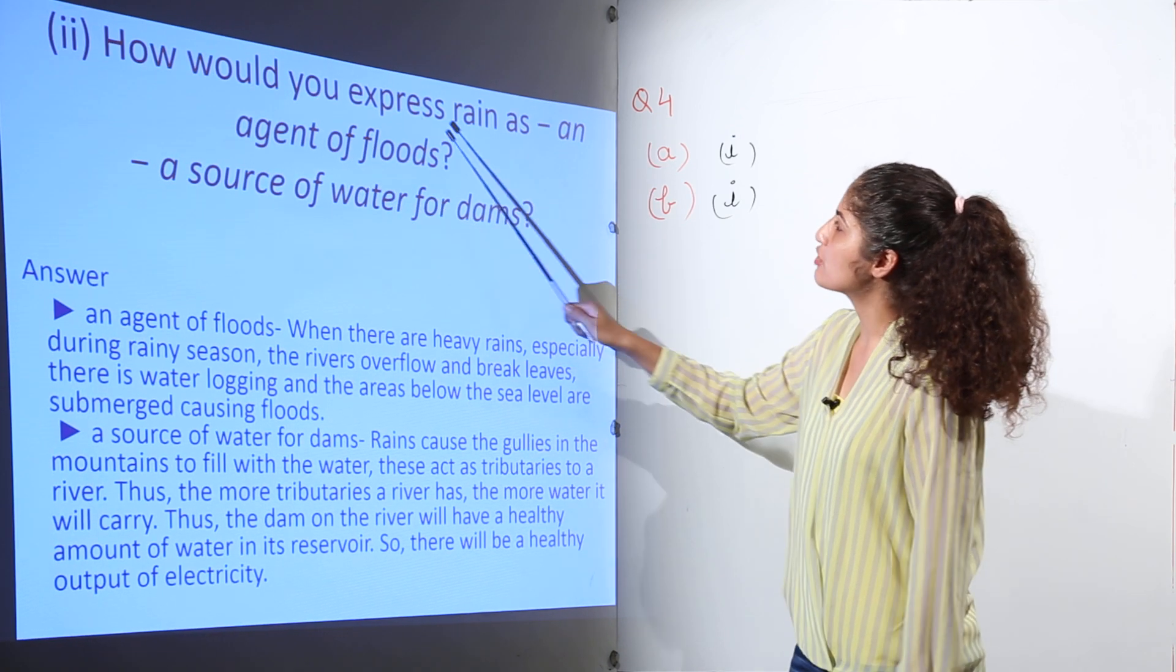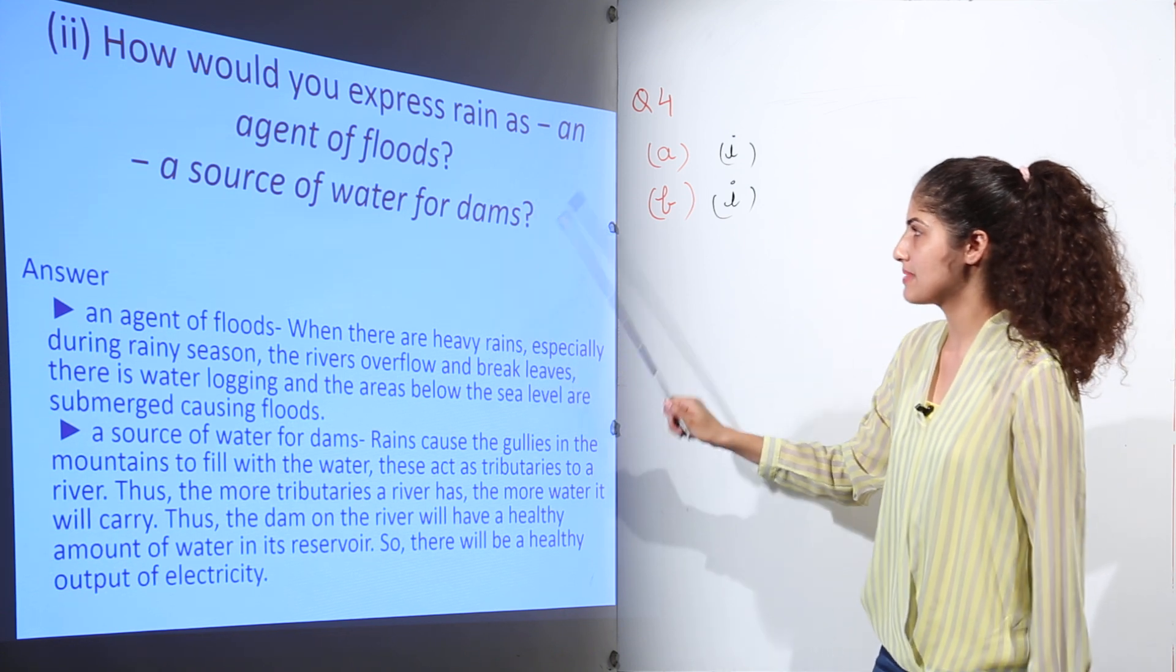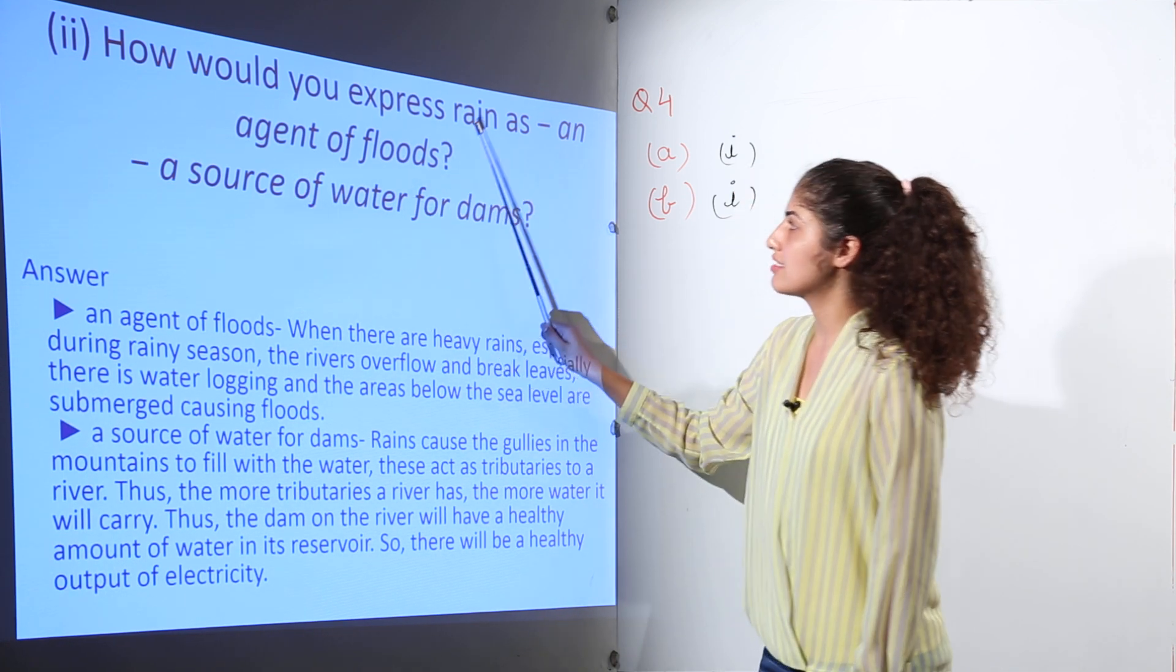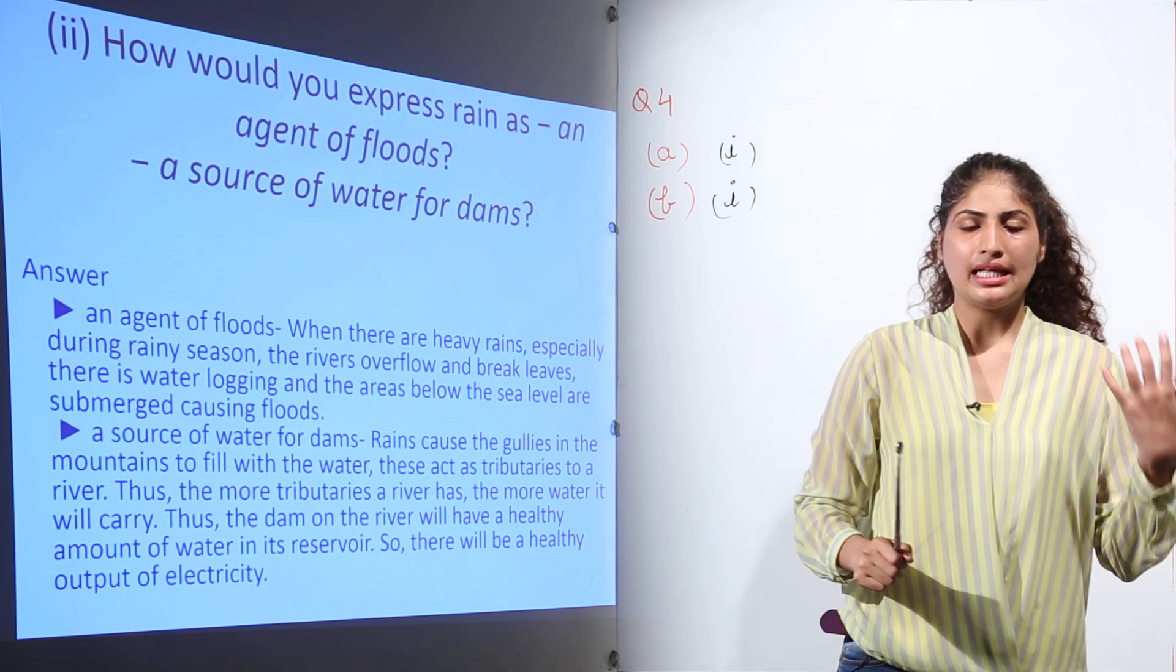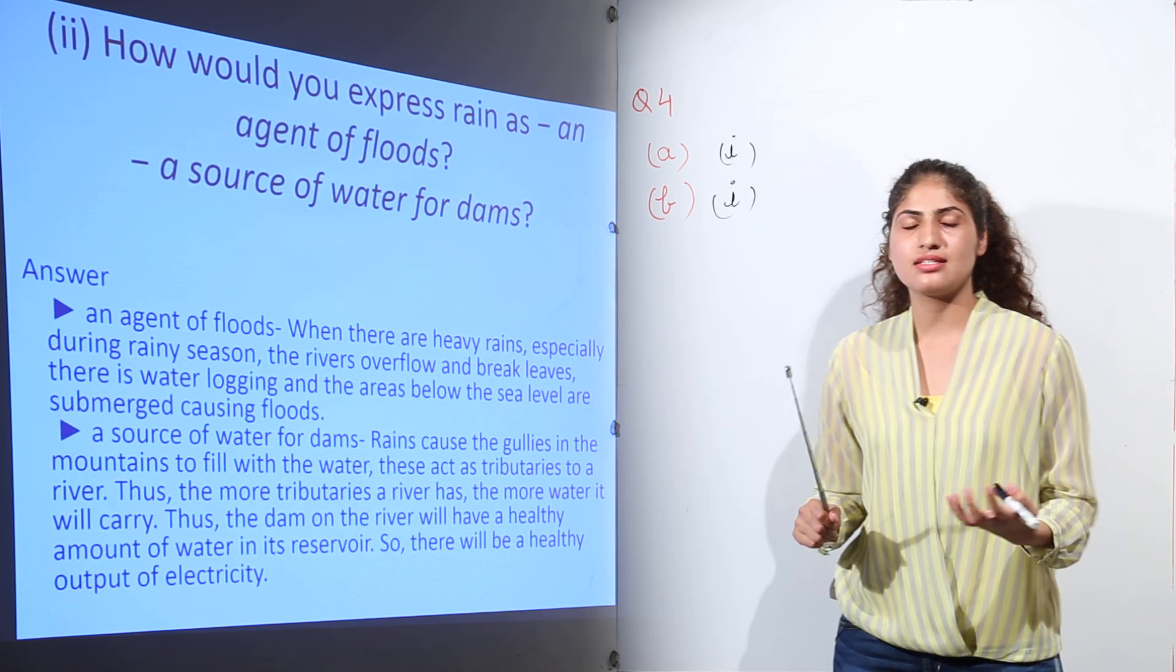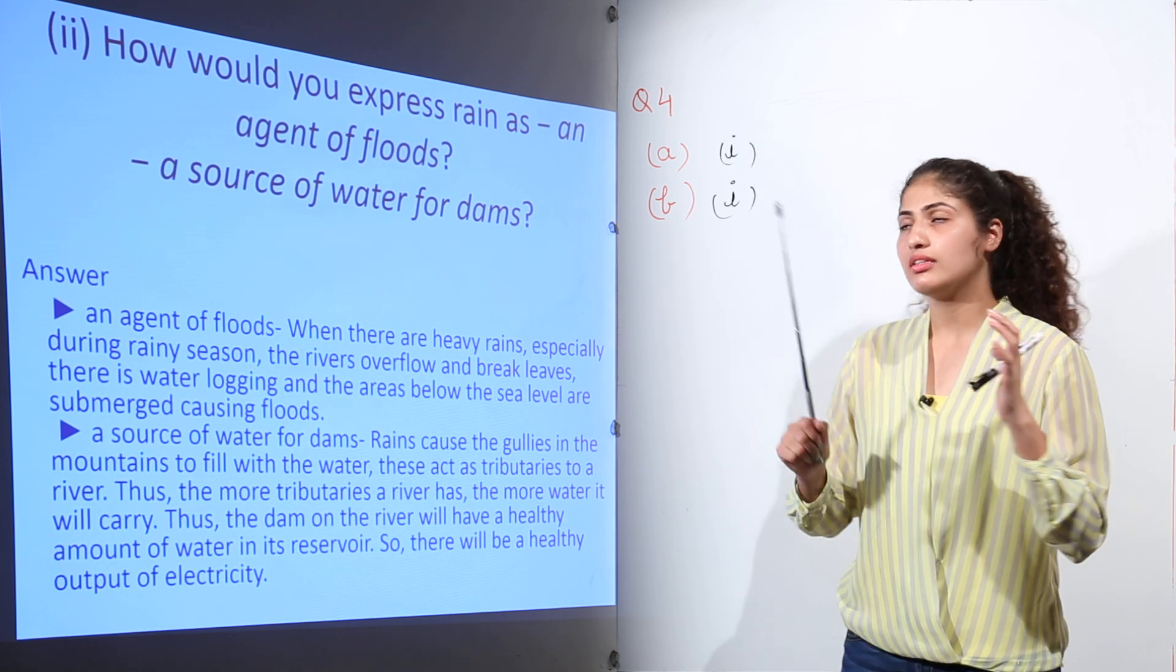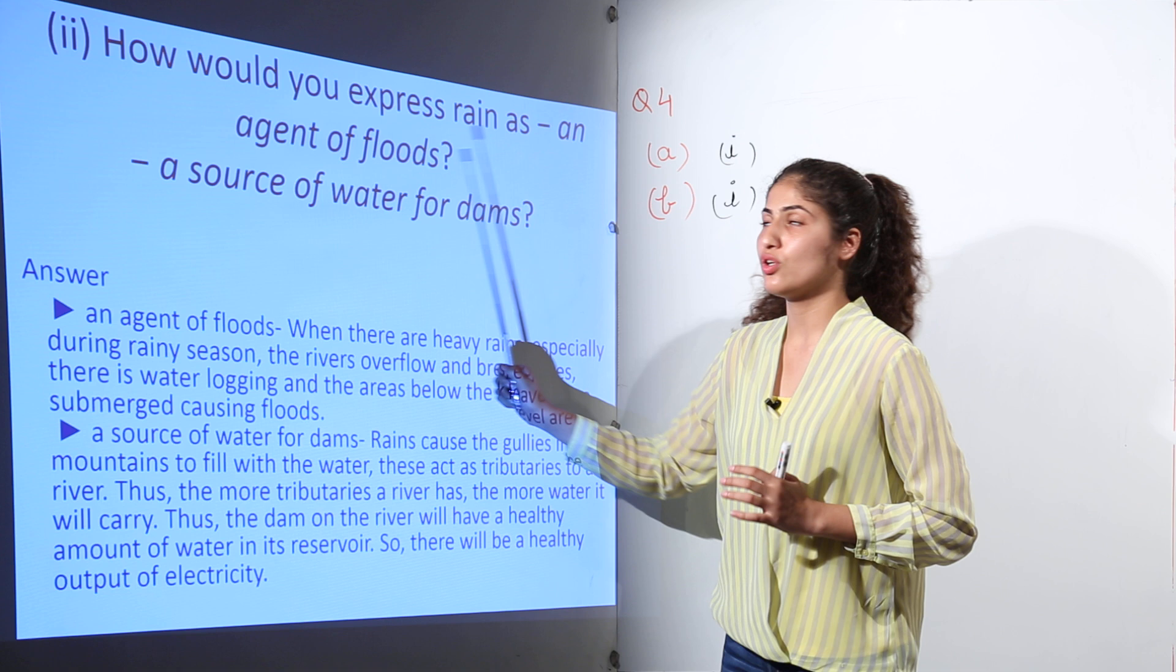Next question: How would you express rain as an agent of floods, a source of water for dams? An agent of floods: when rain falls heavily, then the sea level raises and ultimately the places, the houses which are below the sea level, they get submerged and that moment it is an agent of flood.